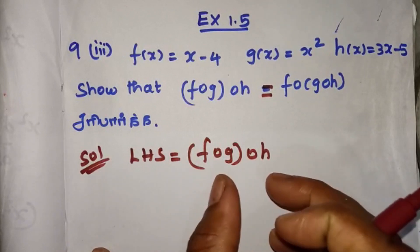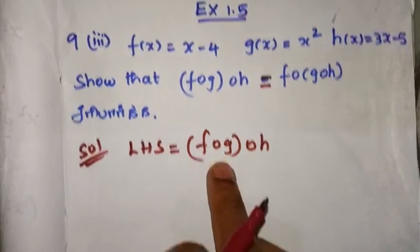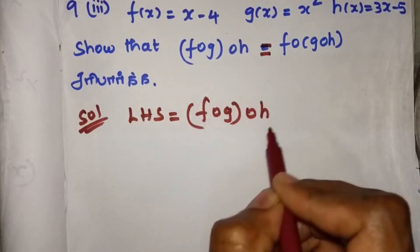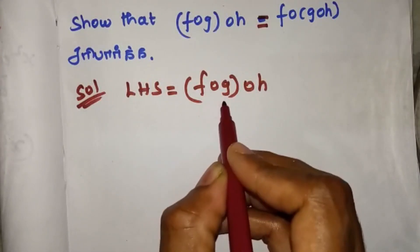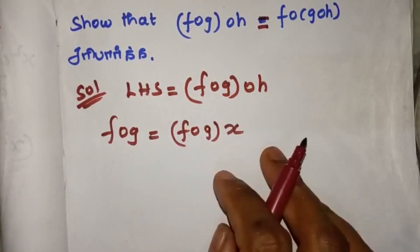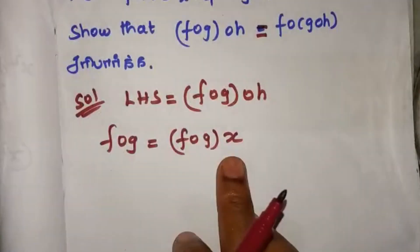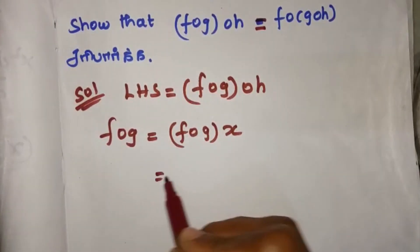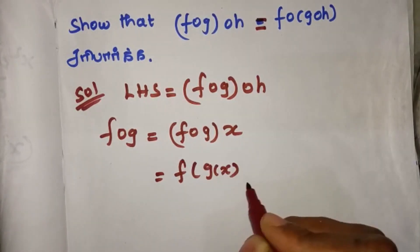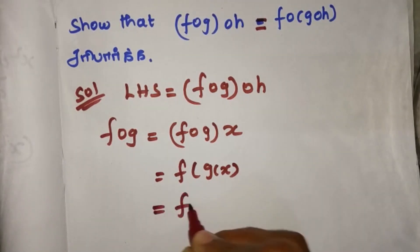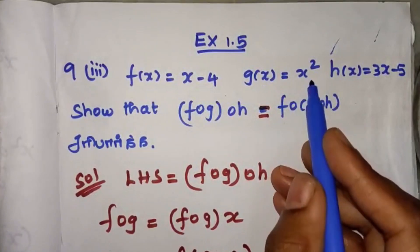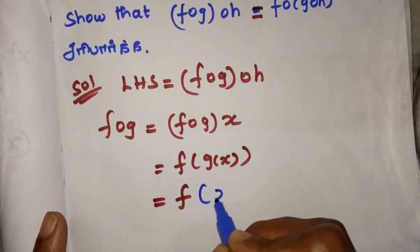Left hand side is equal to f of g oh. f of g is equal to f of g of x. We have to substitute the function of x, so this will give us the function of x.